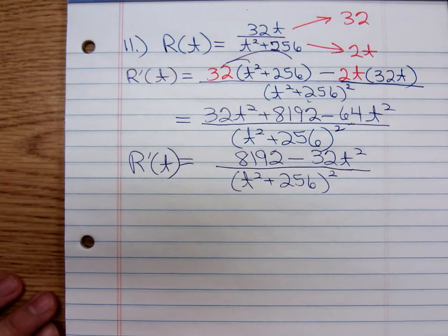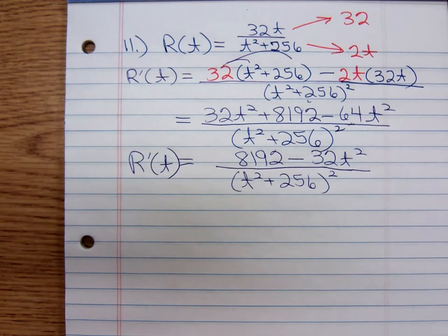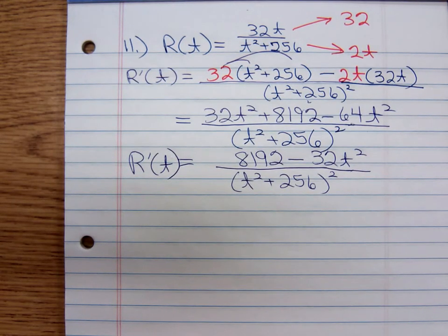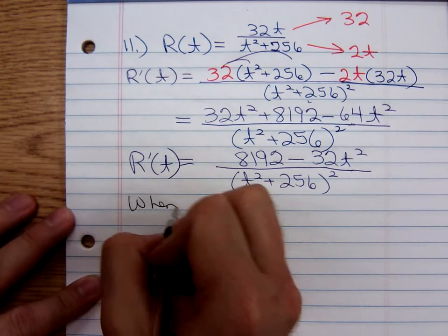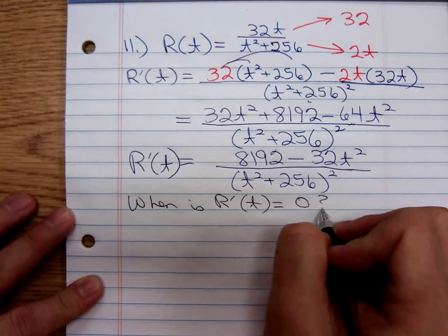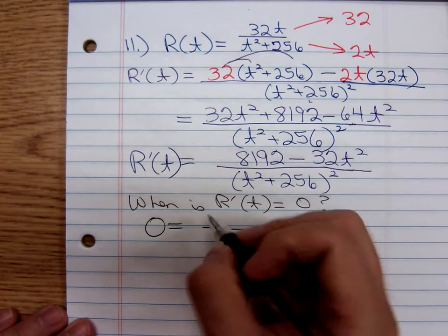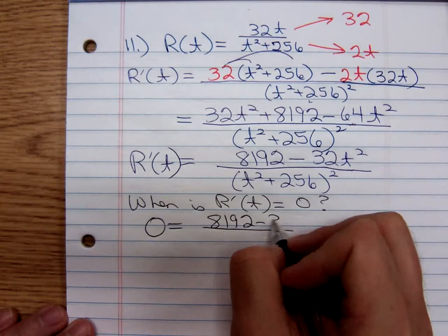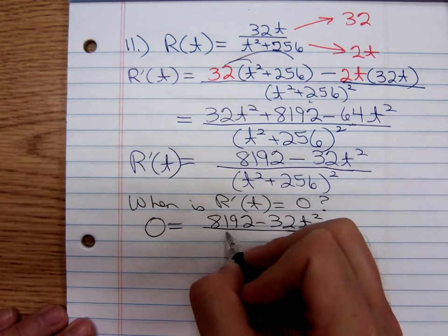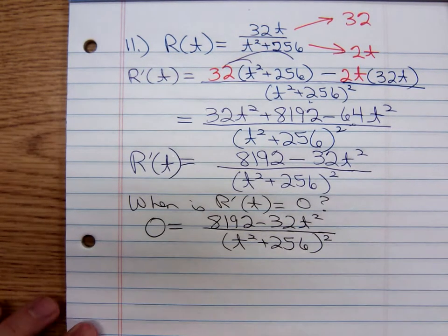Now we have to find our critical numbers. That means we need to know when is the derivative equal to zero, when is it undefined. Let me write out: when is R'(t) equal to zero? Set the derivative equal to zero.